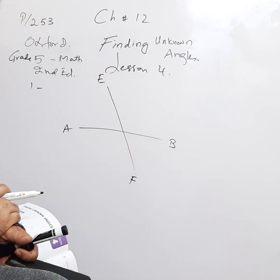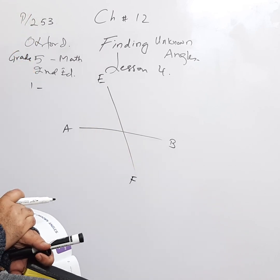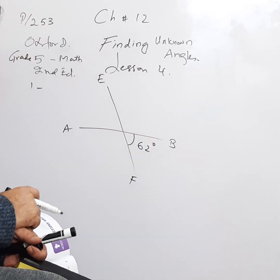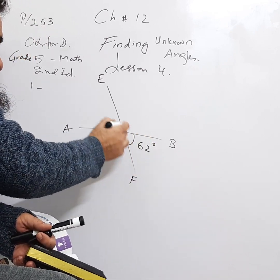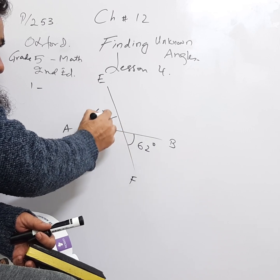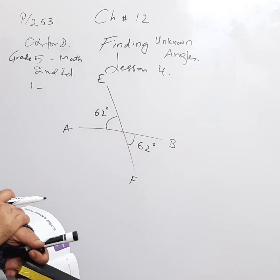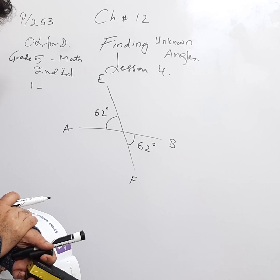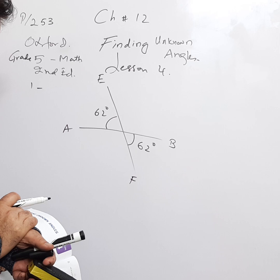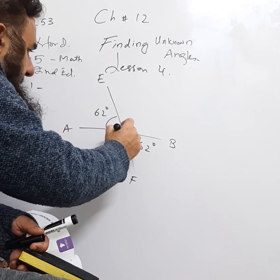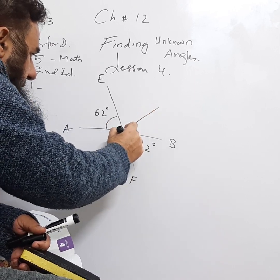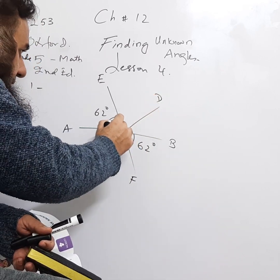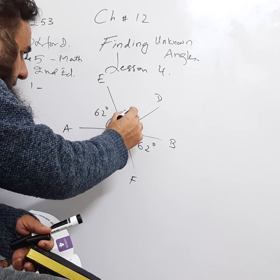These are two straight lines and they are making an X. This is 62. If this is 62, then this is also 62 because these are two vertically opposite angles. All right, then we have another line like this, CD, and this angle is 75.